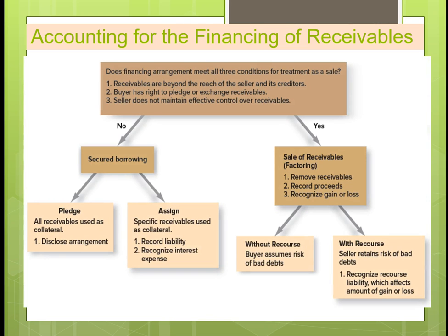For accounting for financing of receivables, there are two ways you can record it. One way is as a sale of receivables — that's called factoring. If it's not, it's really secured borrowing, and in that case you're not going to take the receivables off the books. If it is considered a sale of receivables or factoring, then under GAAP you can remove the receivables from the books, record the proceeds, and recognize gain or loss.